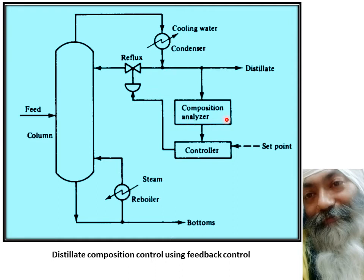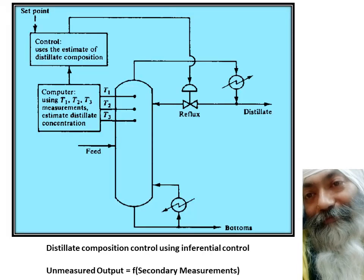The whole story here is about the availability of the composition analyzer, which enables the feedback control we have been studying. But in case this composition analyzer is not available, we will go in for a special kind of control called inferential control. In inferential control, the unmeasured output is estimated by making some secondary measurements, and we develop a function of those secondary measurements that gives us a fairly good estimate of the unmeasured output.